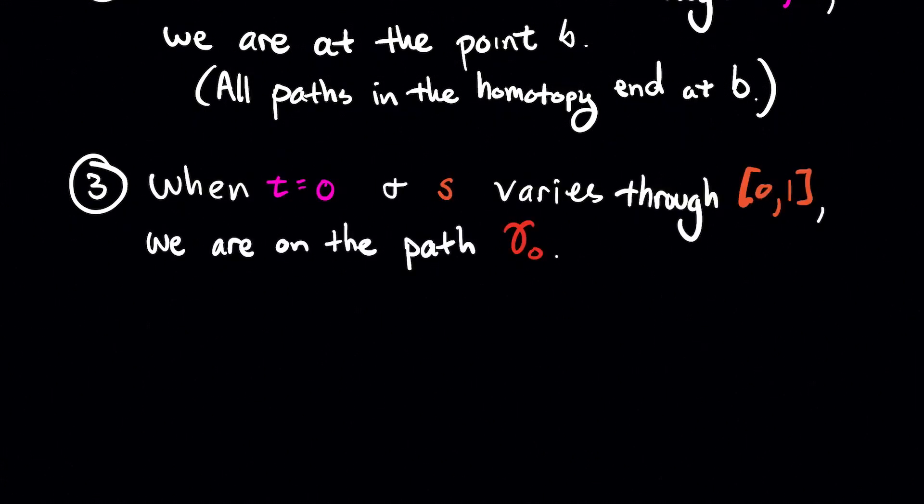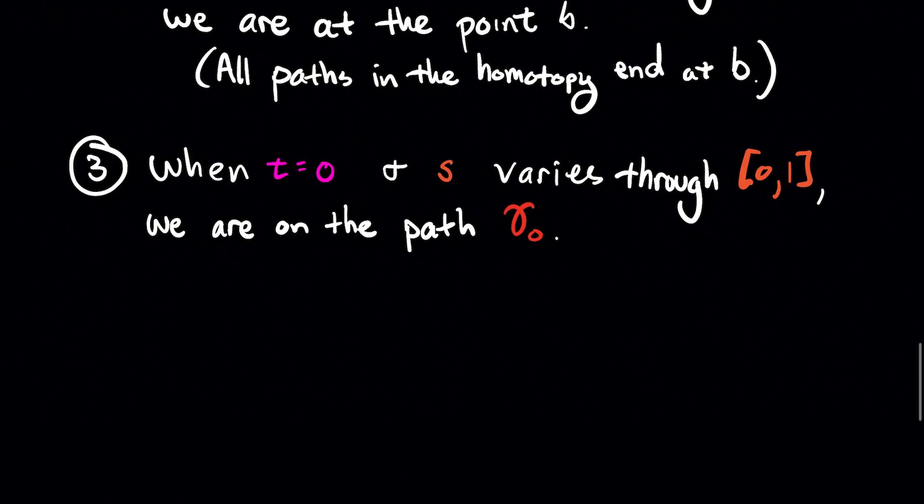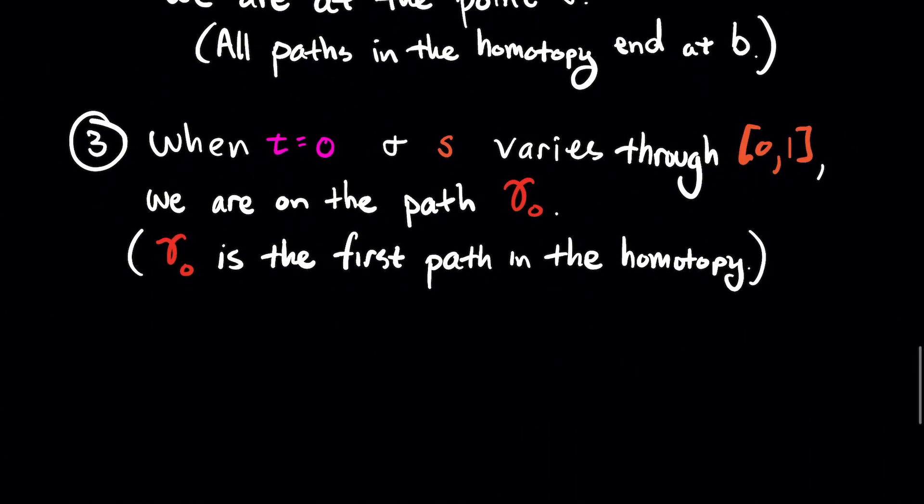Number 3: When T equals 0 and S varies through 0 to 1, we are on the path gamma 0. So gamma 0 is the first path in the homotopy.